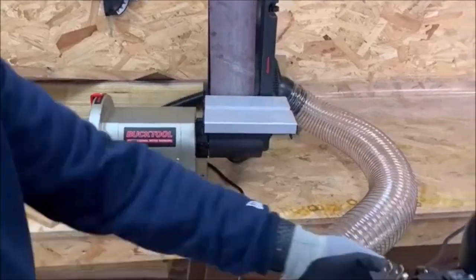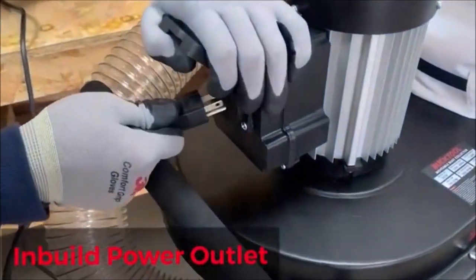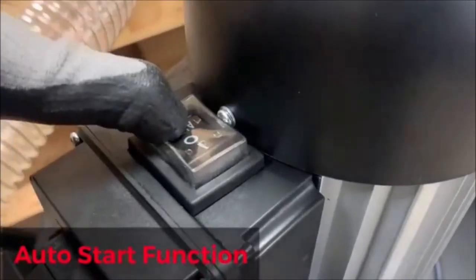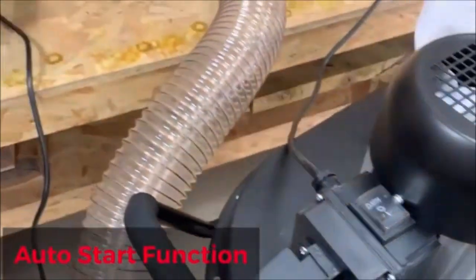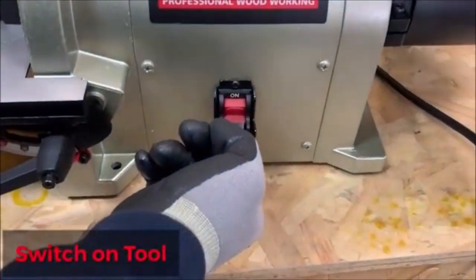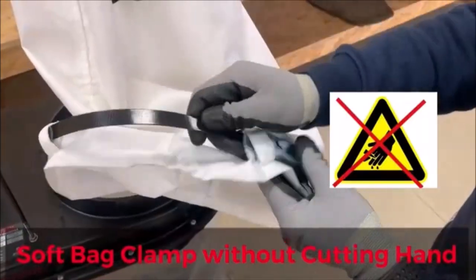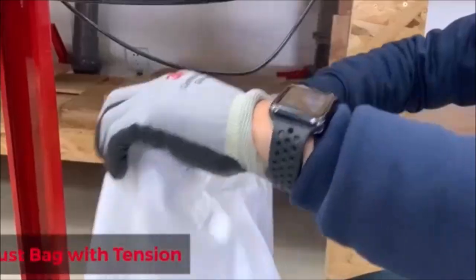The Bucktail 1.2 Horsepower Auto Start Dust Collector is a user-friendly solution for keeping your workshop clean and efficient. With its auto start function, it provides a power outlet for your power tools, eliminating the need for additional outlets and reducing frequent opening and closing.